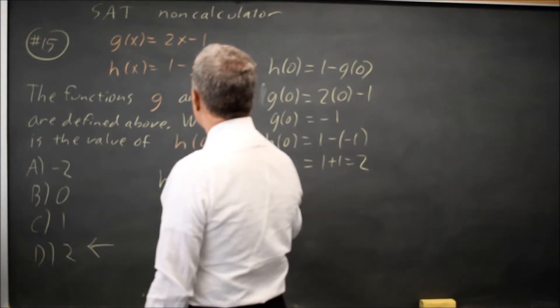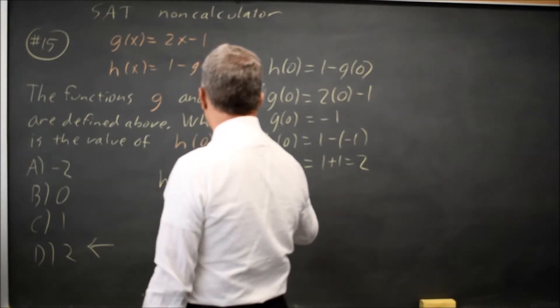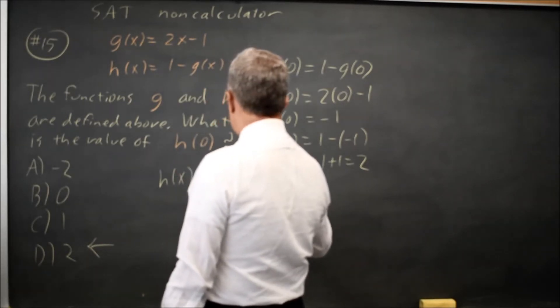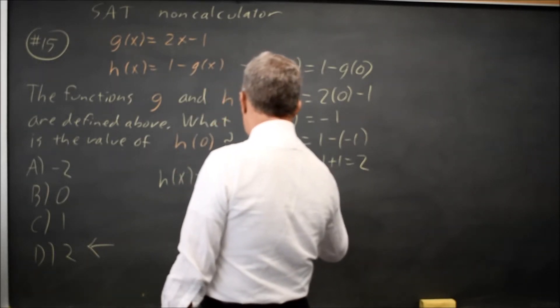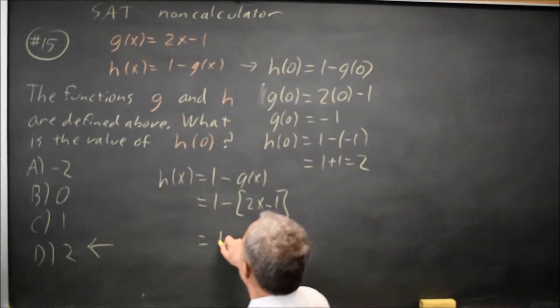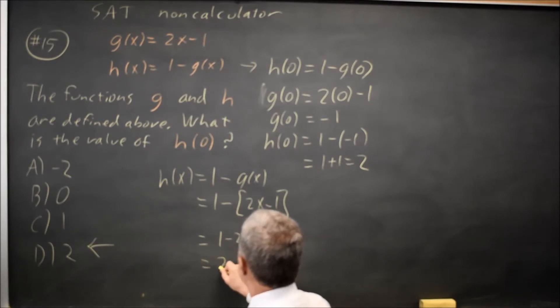h of x equals 1 minus g of x means h of x equals 1 minus 2x minus 1. So h of x equals 1 minus 2x plus 1. So h of x equals 2 minus 2x.